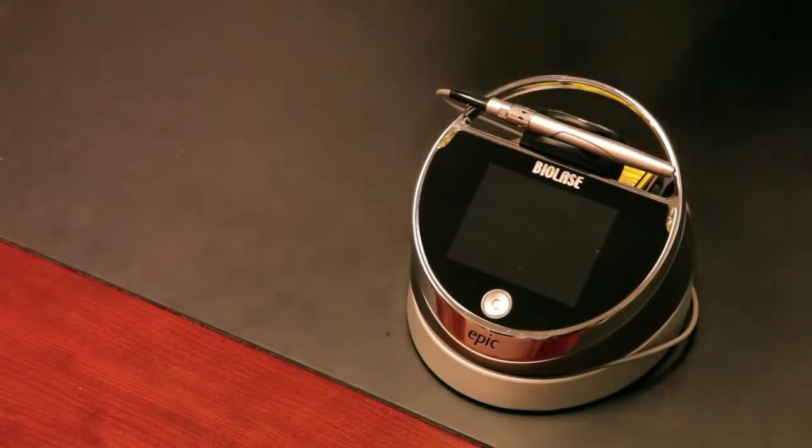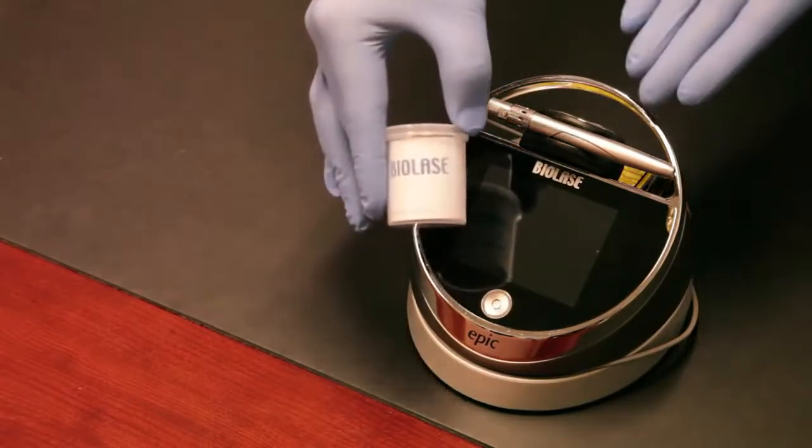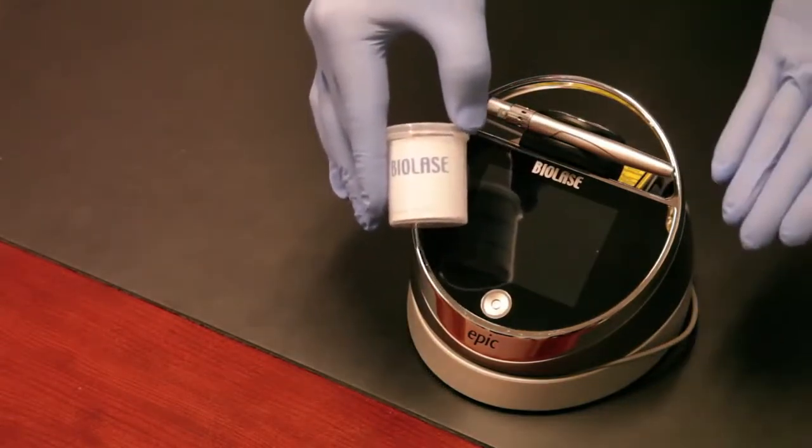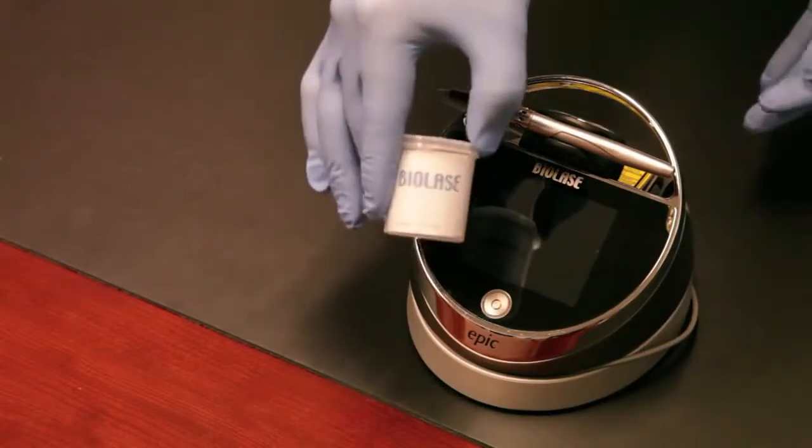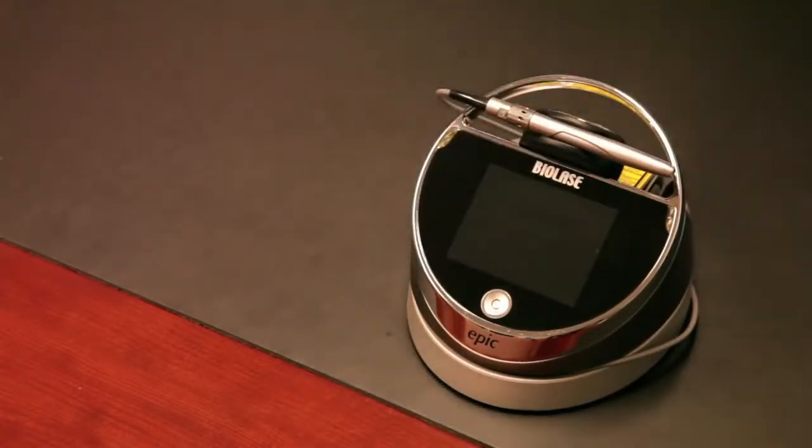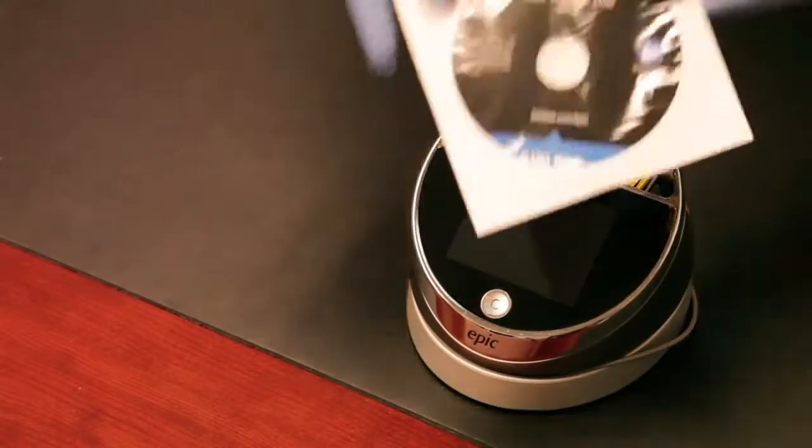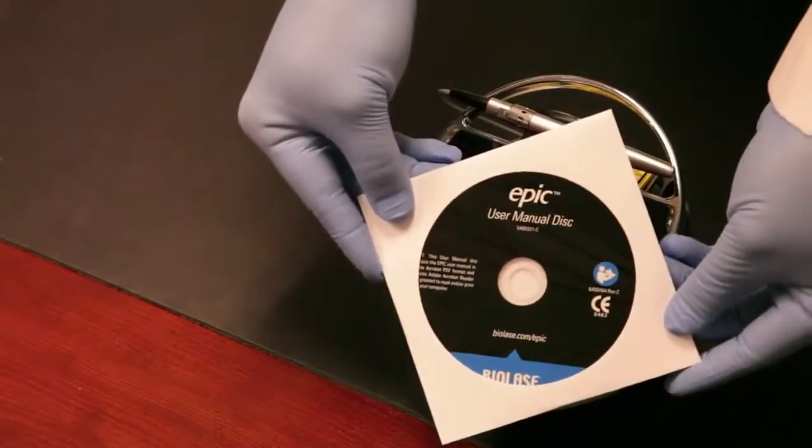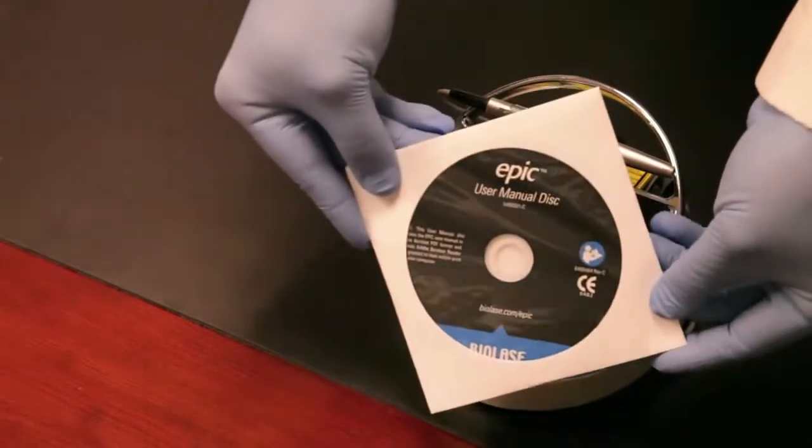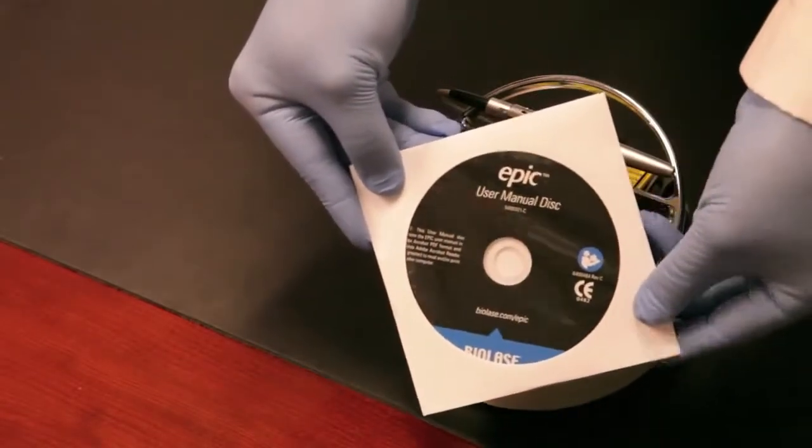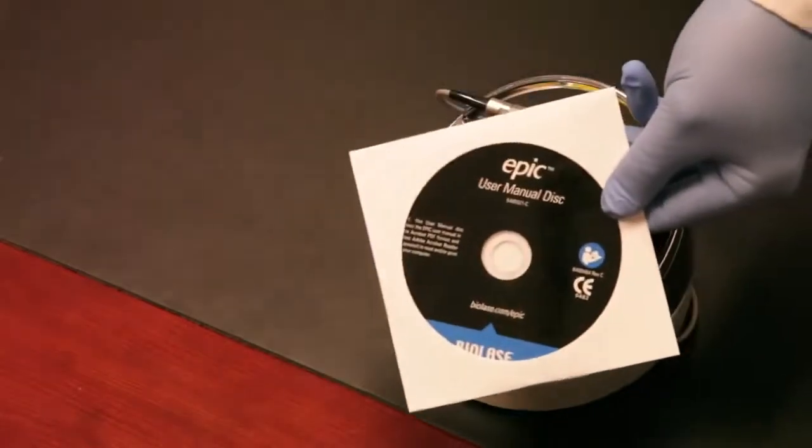There's also a number of other components. There's a tip initiation kit. When you use the laser to cut soft tissue, you have to initiate the end of the tip, which means darkening it. This kit is for that. It's very simple to do. Also batteries for your foot pedal, and our user manual, which comes on a disk. We highly recommend you read this before using your Epic laser.